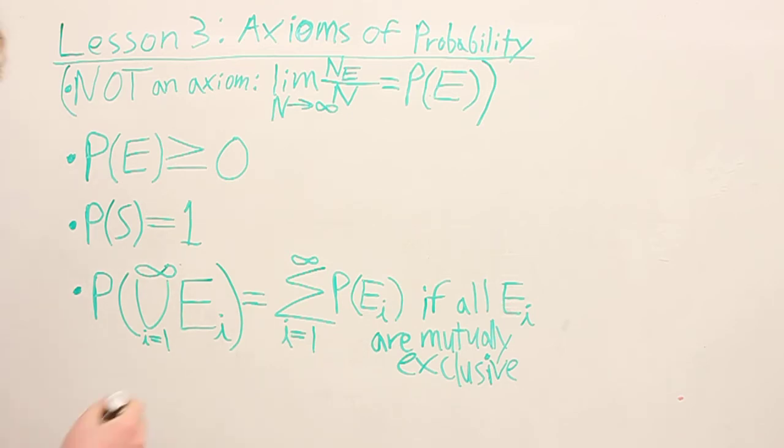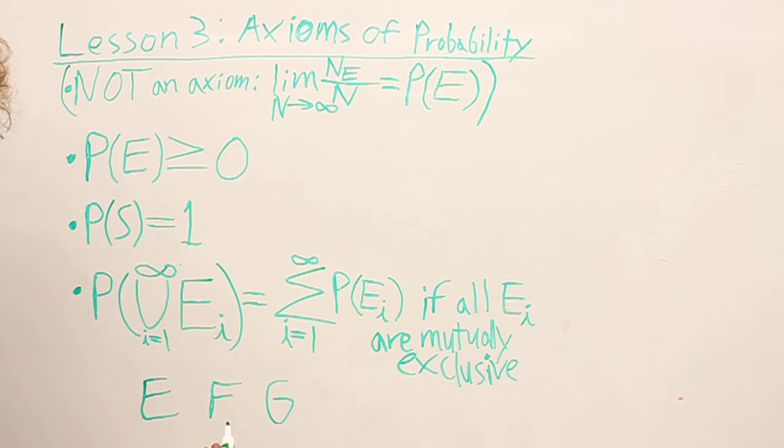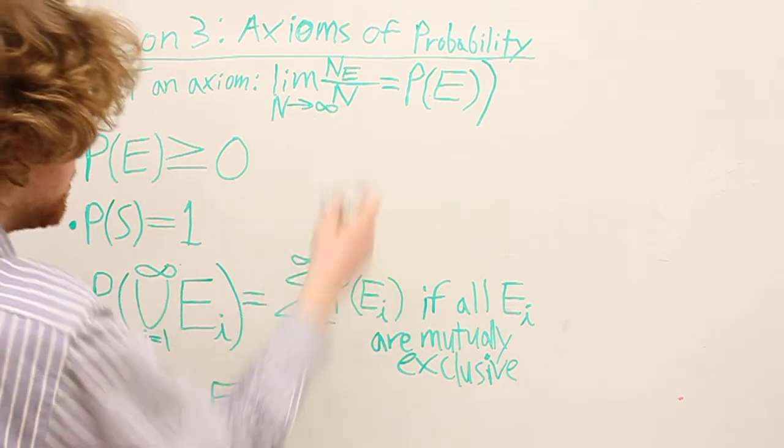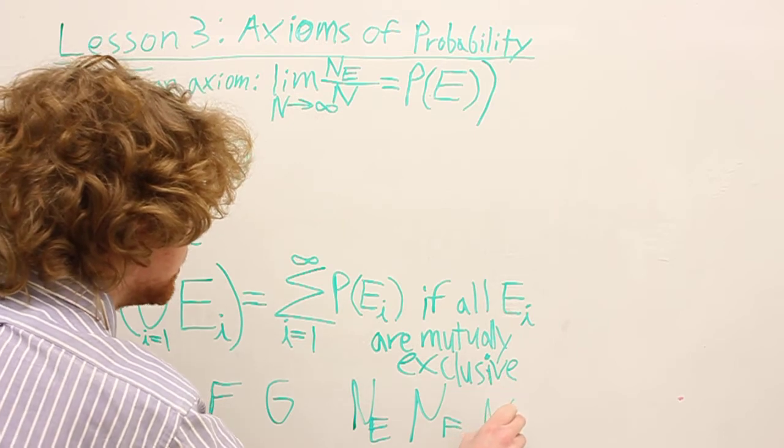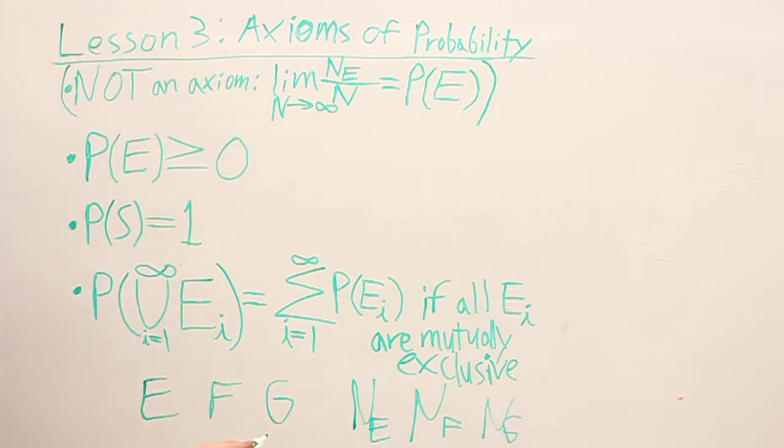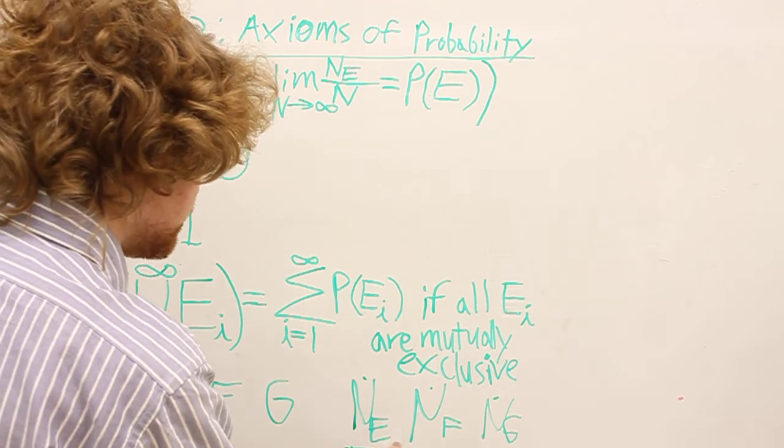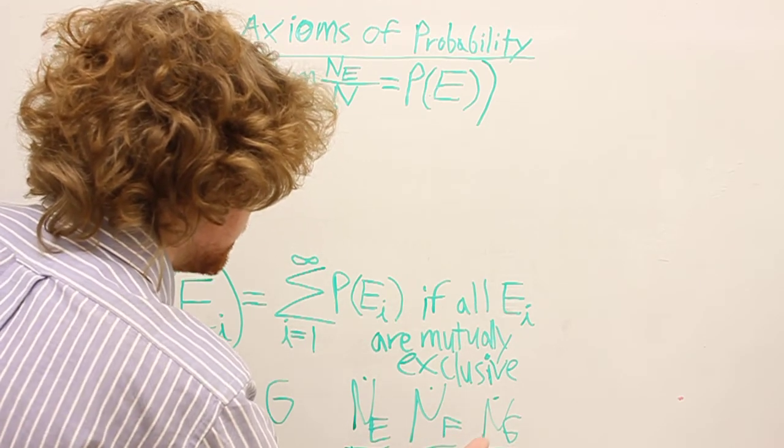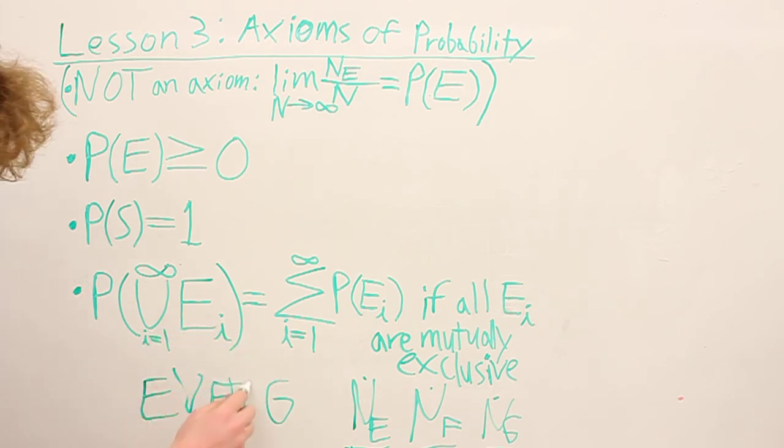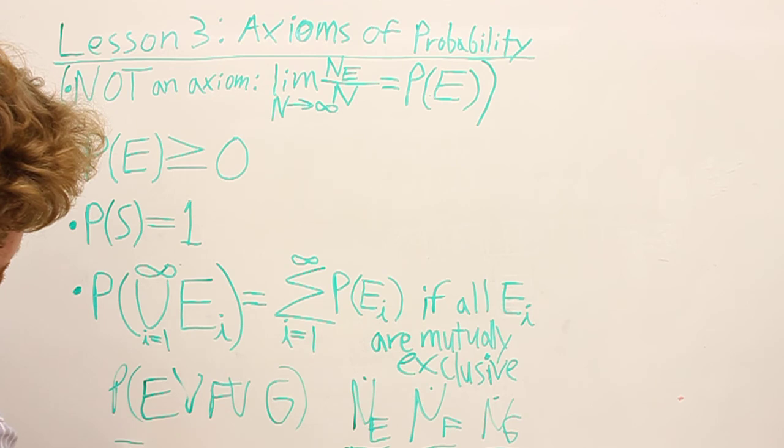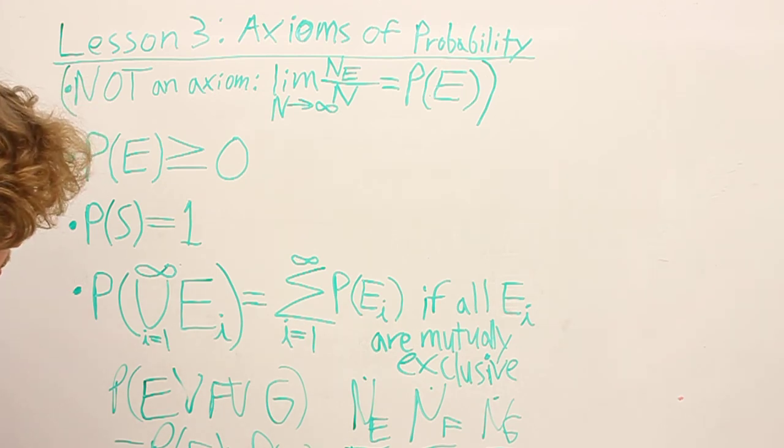Why is this? Well, let's think. Let's say your events are E, F, and G, and they're mutually exclusive. Let's say you're going to count up these fractions separately. You've got N_E, N_F, and N_G. Each time you see an outcome that's in any one of these, it's only going to be in one of these three. Because of that, the probability of E or F or G equals the probability of E plus the probability of F plus the probability of G.